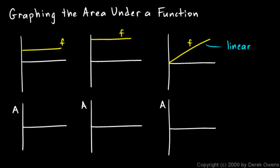Now we're going to look at some functions, and we'll start with some very simple functions. We're going to sketch graphs of the corresponding area functions. In each case, we're going to imagine a vertical line starting at x equals 0 and sliding to the right. As it moves to the right, it sweeps out this area behind it. We're going to imagine how that area A changes as x increases, and we're going to graph that down here on the area axis. This area has a different value for every value of x where that vertical line is.